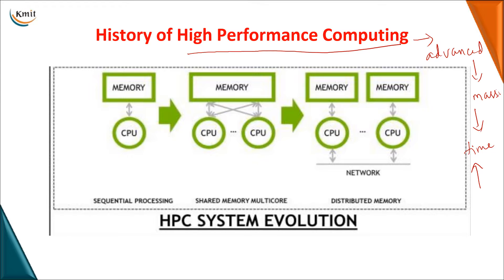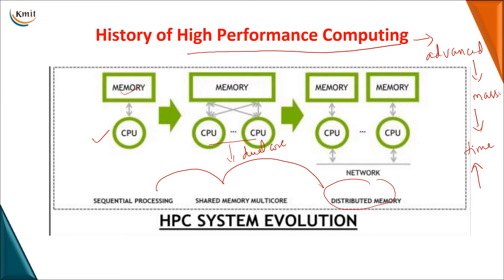Looking at the history of high performance computing, it has ranged from sequential processing to shared memory and finally to distributed memory. Initially we had only one CPU for sequential processing. As technologies evolved, we moved to dual core processors using shared memory, and now we can go for a distributed architecture where nodes can be on the same or different networks and still communicate.